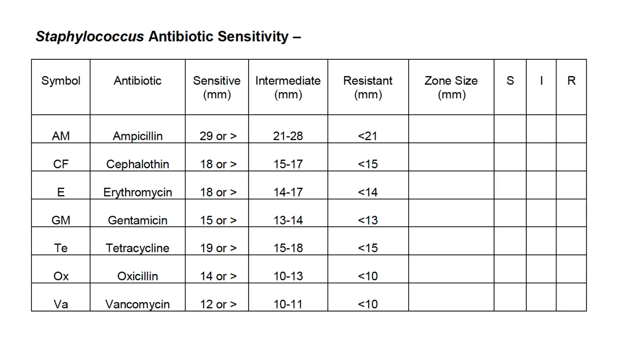Remember, we measured the disc for erythromycin, and it measured 28 millimeters. Looking at this chart, 28 millimeters is 18 or greater, so that falls into the sensitive category. That means that this bacteria, Staphylococcus, is sensitive to the antibiotic erythromycin.